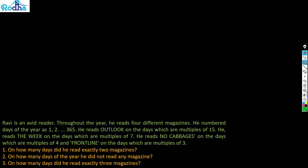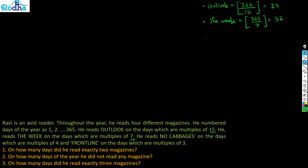Let's calculate the number of days Ravi reads each magazine. For Outlook (multiples of 15): 365 divided by 15 = 24 days. For The Week (multiples of 7): 365 divided by 7 = 52 days. Next is No Cabbages.